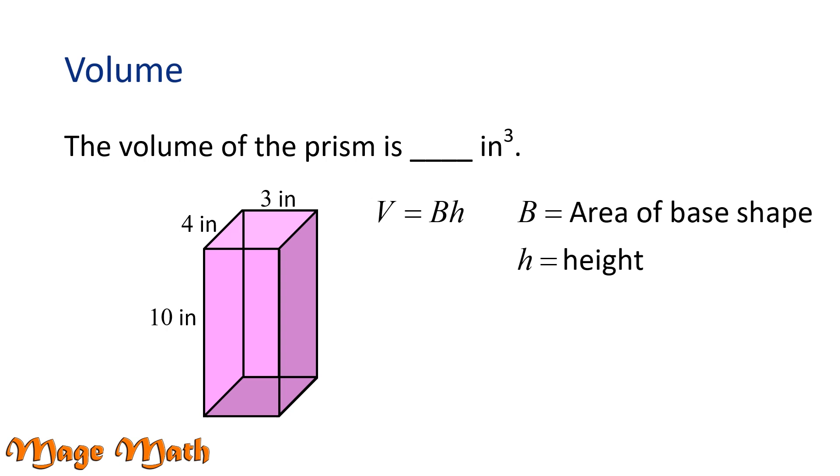Oh wait! Do we know the area of the base shape? We said the base shape is the rectangle with the dimensions of 3 inches by 4 inches. The area of a rectangle is found by multiplying its length times width. In this case, 3 times 4, which we know is 12.